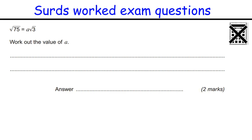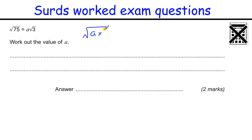SURDS worked exam questions. I'm going to run through about 10 questions, all non-calculator, showing you how to do SURDS. Let's start with some basic ones. The key thing we need with SURDS is this rule: the square root of A times the square root of B equals the square root of A times B.